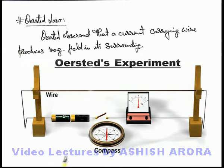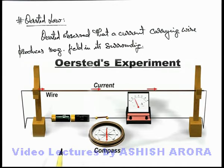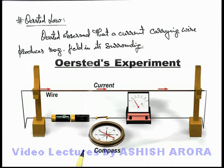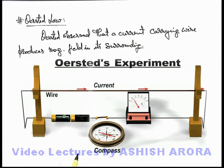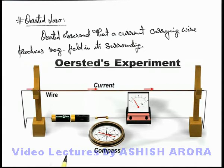Here you can see when the switch is closed, a current starts flowing in the wire. As soon as the current flows, the compass needle is deflected, which verifies that the current is producing a magnetic field due to which the needle is deflected.